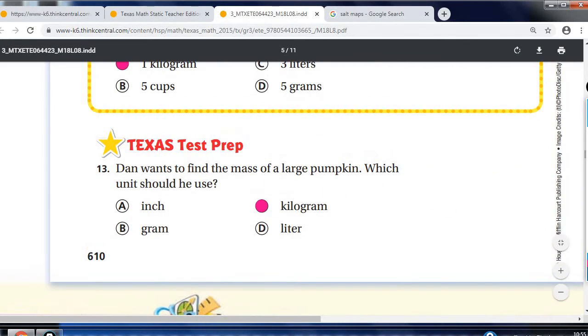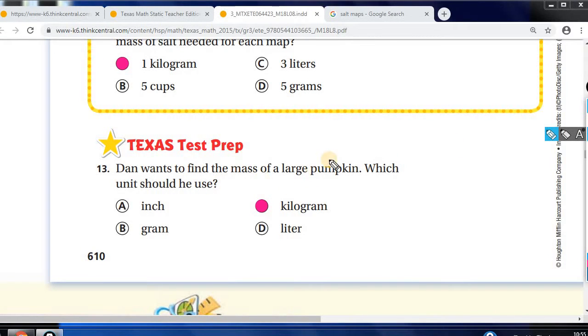Let's look at number 13. Dan wants to find the mass of a large pumpkin. Again, large pumpkin. Well, inch, that's not, we don't use an inch to measure mass. The liter is not being used. That's liquid. So it's either gram or kilogram. If it's a large pumpkin, it'll be the kilogram.